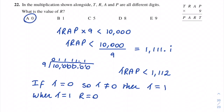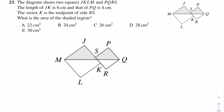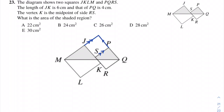Question 23: the diagram shows two squares JKLM and PQRS. The length of JK is 6 cm and PQ is 4 cm. Vertex K is the midpoint of side RS. What is the area of the shaded region? I'm going to extend line MJ parallel to SP, and also extend line PQ parallel to JK. These four parallel sides form a square, and we end up with a right-angle triangle in that region.